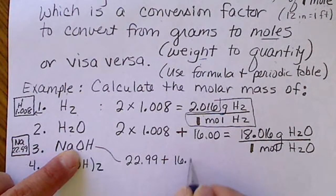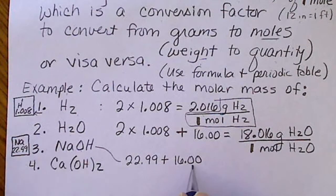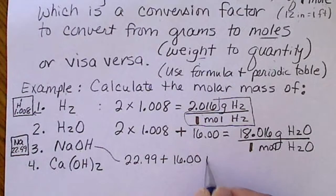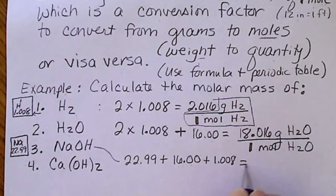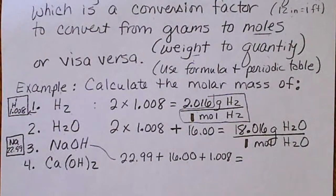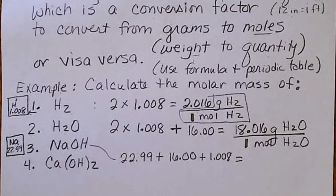Oxygen from the periodic table is where that comes from. There's only one hydrogen, 1.008, and I've got to put this number in the calculator.